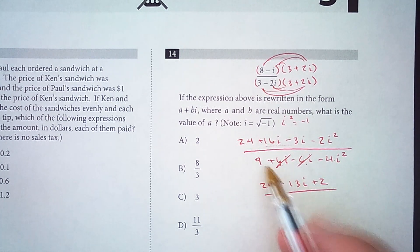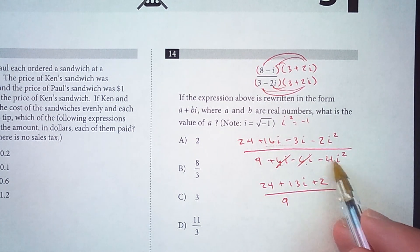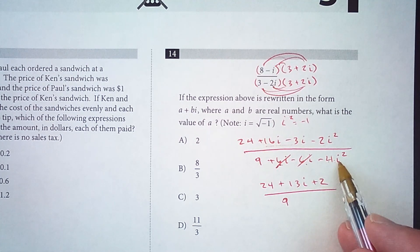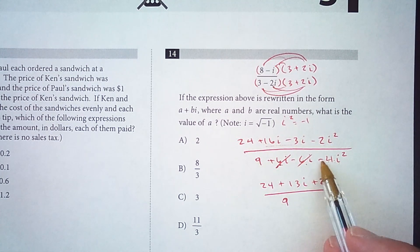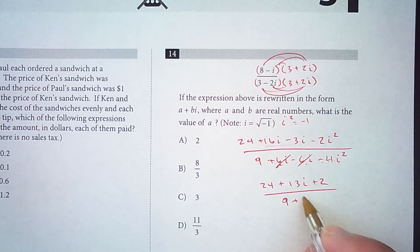In the denominator we have 9 minus 4i squared, so that i squared is now going to be negative 1. So it's negative 4 times negative 1, which is positive 4.